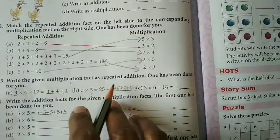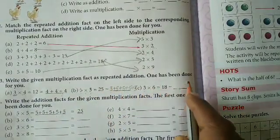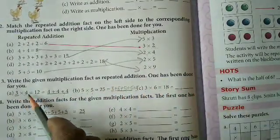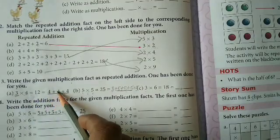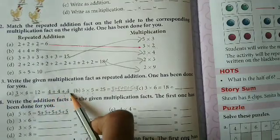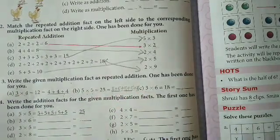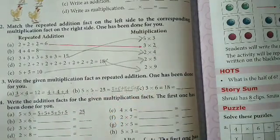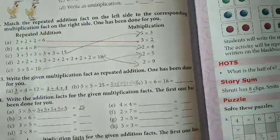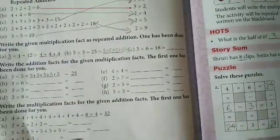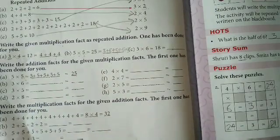Next, repeated addition. 3 × 4 equals 12. 4 plus 4 plus 4 equals 12. 5 × 5 equals 25. 5 added 5 times equals 25. Do it yourself for the remaining problems.